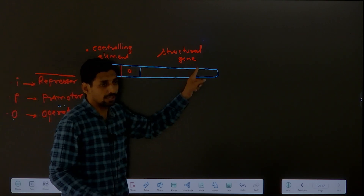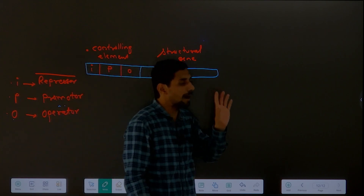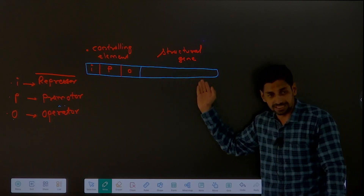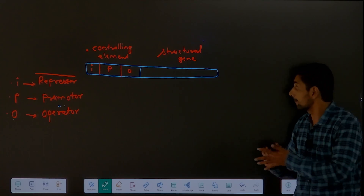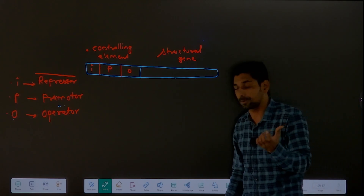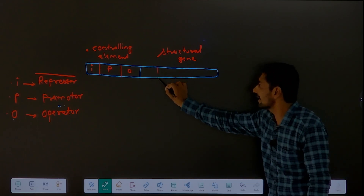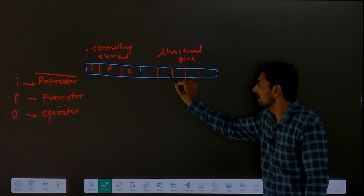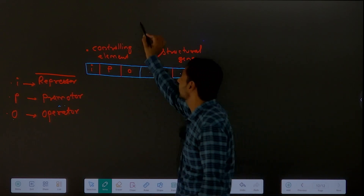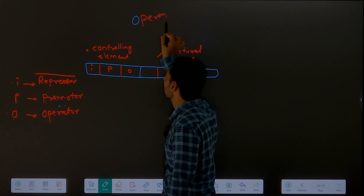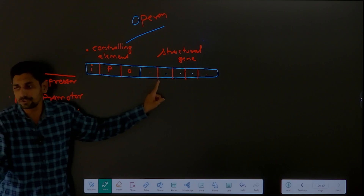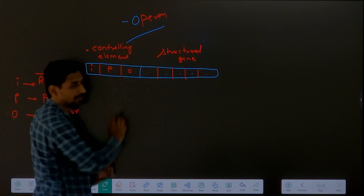The number of genes in the structural gene can vary - it can be 3 genes, 4, 5, or 10. Any number of genes can be there. And all these structural genes perform similar kind of function. This will be your group of genes. All of them are structural genes. So group of genes performing similar kind of function is called as operon. All these genes will perform one related, similar kind of function.